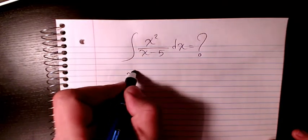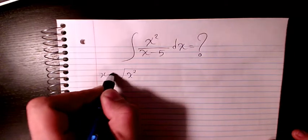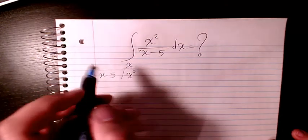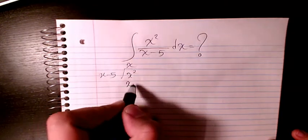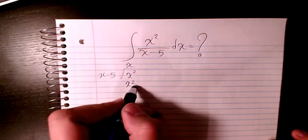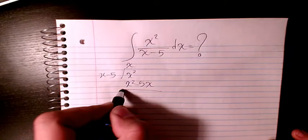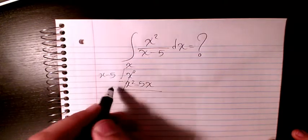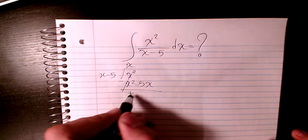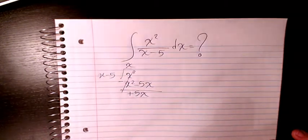So x squared divided by x minus 5, I will have x. x times x will be x squared. x times negative 5 will be negative 5x. These two I subtract them and it will be 0 minus negative 5x which will be positive 5x.